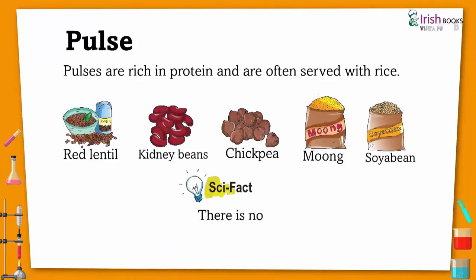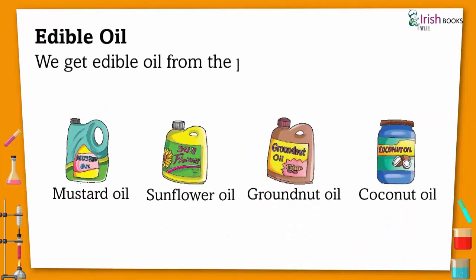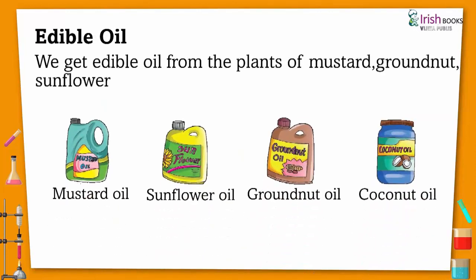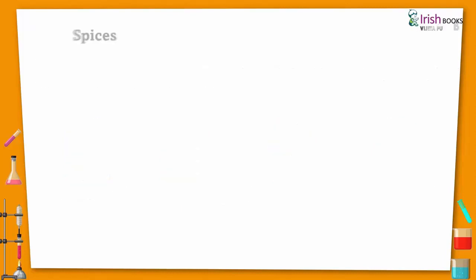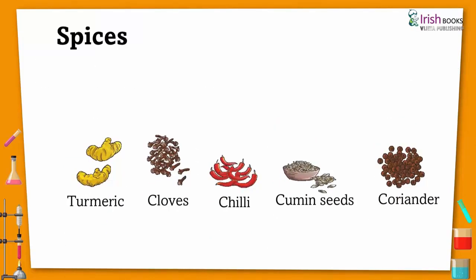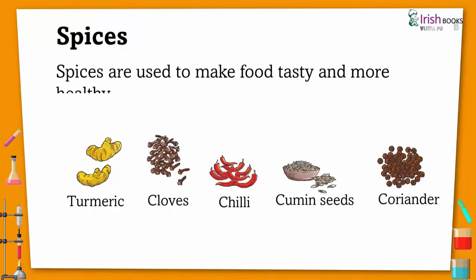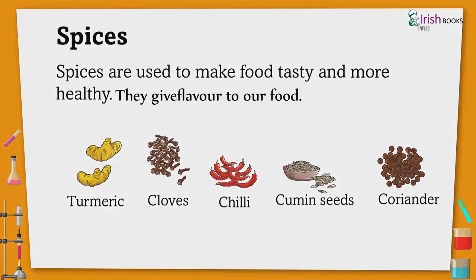Scientific fact: there is no life without plants. Edible oil — we get edible oil from plants of mustard, groundnut, sunflower, and coconut. Spices are used to make food tasty and more healthy; they give flavor to our food, like turmeric.